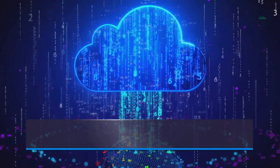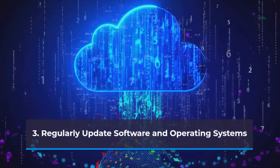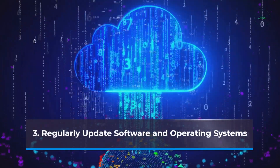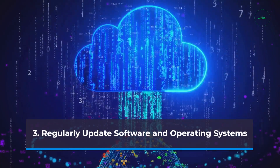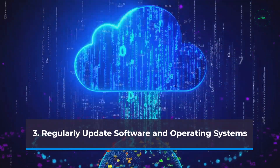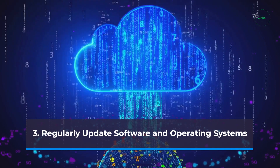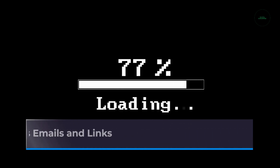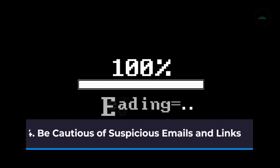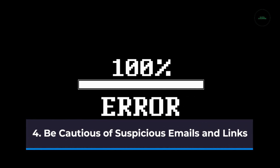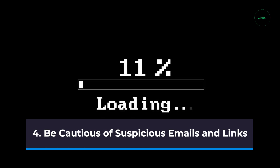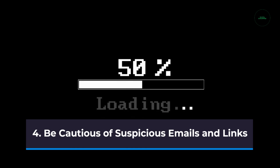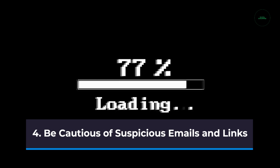Keeping your software and operating systems up to date is vital in maintaining a secure digital environment. Developers frequently release updates that address vulnerabilities and security issues — enable automatic updates whenever possible or manually check for updates regularly. Exercise caution when receiving emails from unknown senders or encountering suspicious links. Avoid clicking on links or downloading attachments from unfamiliar sources, as they may lead to phishing websites or malware downloads. Verify the legitimacy of the email or link before taking any further action.